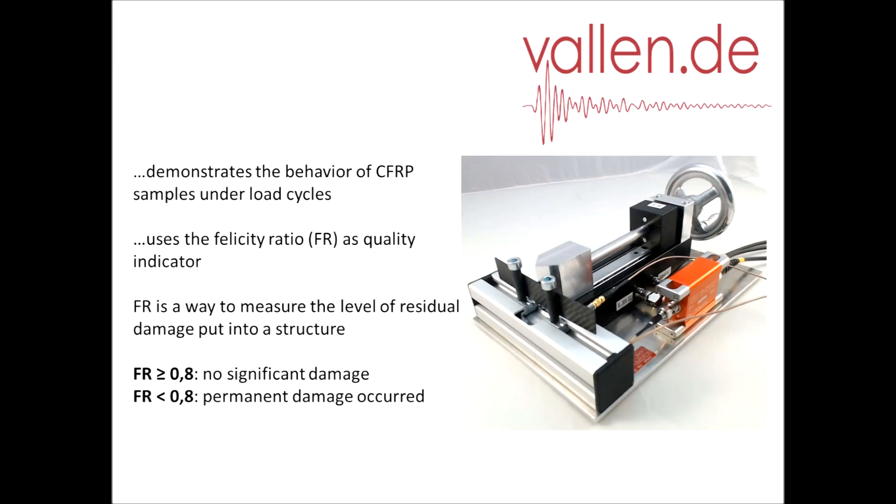The Felicity Ratio is a way to measure the level of residual damage put into a structure. If the Felicity Ratio is higher than 0.8, the structure is not significantly damaged. If the Felicity Ratio is below 0.8, permanent damage occurred.